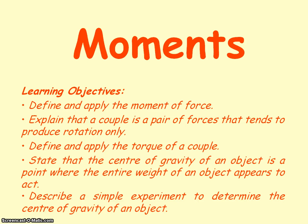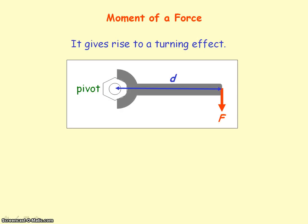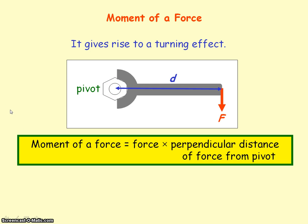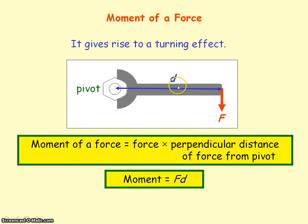We're going to be looking at moments of a force. A moment of a force gives rise to a turning effect, a rotation about a pivot point. You have force F which has a perpendicular distance D from the pivot point. Moment of a force is defined as the force multiplied by the perpendicular distance of the force from the pivot point. So the moment equals F times D.